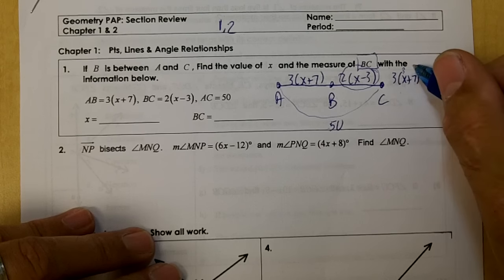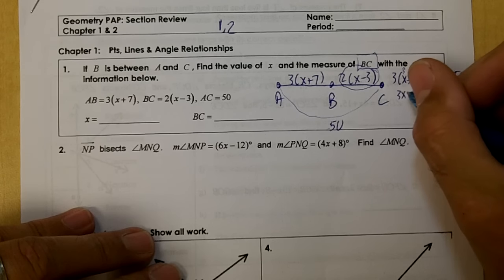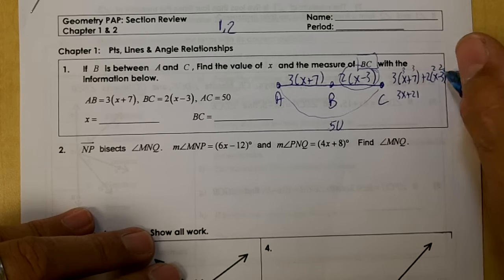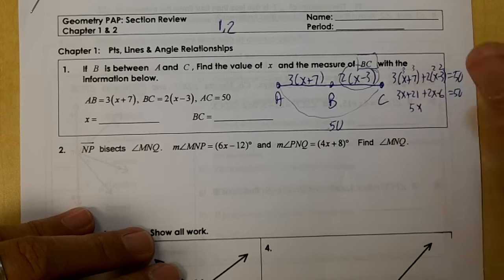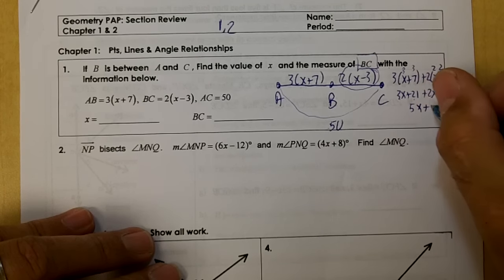We use the distributive property here. 3X plus 21, plus 2X minus 6 equals 50. We're going to add 3X and 2X and get 5X. 21 minus 6 is 15.